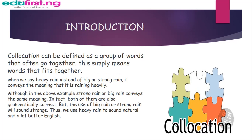What is collocation? Collocation can be defined as a group of words that often go together. This simply means words that fit together. When we say 'heavy rain' instead of 'big rain' or 'strong rain,' it conveys the meaning that it is raining heavily. Although in the above example, 'strong rain' or 'big rain' conveys the same meaning.